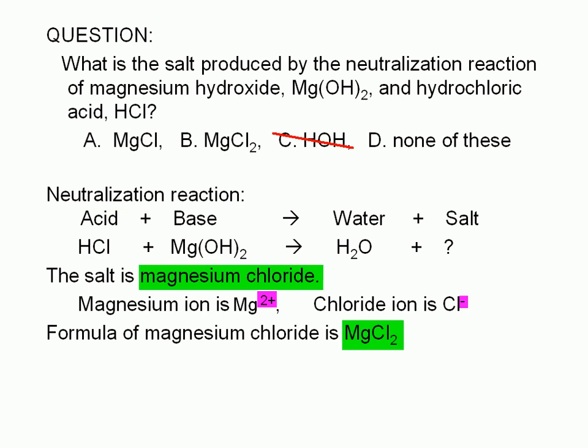A compound is neutral, so the total charge of the ions in magnesium chloride must be 0. We get this if there are twice as many chloride ions as magnesium ions, since each chloride only carries a -1 charge, whereas a magnesium ion carries a charge of +2. The correct answer is B.